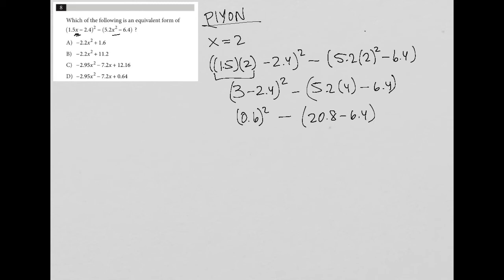Again, 0.6 squared is, sorry, 0.6 times 0.6 should be 0.36.